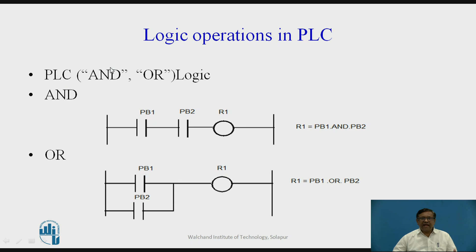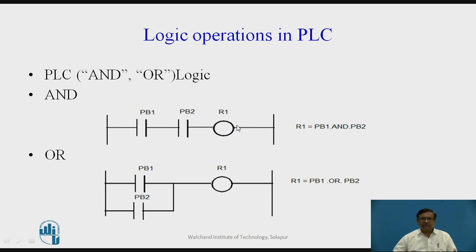Here we are implementing AND and OR logic operations using a ladder diagram of a PLC. This is the ladder diagram for the AND logical operation. If you look here, this is push button 1, this is push button 2, and it is connected to the output called R1. This ladder diagram consists of only one rung, and rails are present — one is called line and another is called neutral in case of AC supply, or positive and negative in case of DC supply.